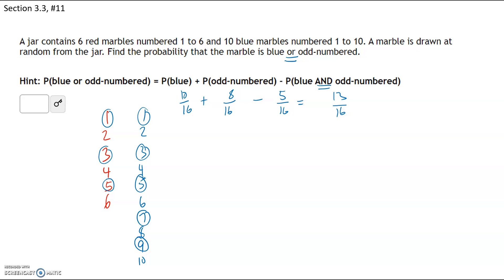So 13 out of 16 marbles are either blue or odd numbered. The only ones that are not are the red even-numbered ones: 2, 4, and 6. Those are red and even, so they don't fall in either category — they're not blue and they're not odd numbered. Other than those three, every other marble is either blue or odd numbered and counts as a success.